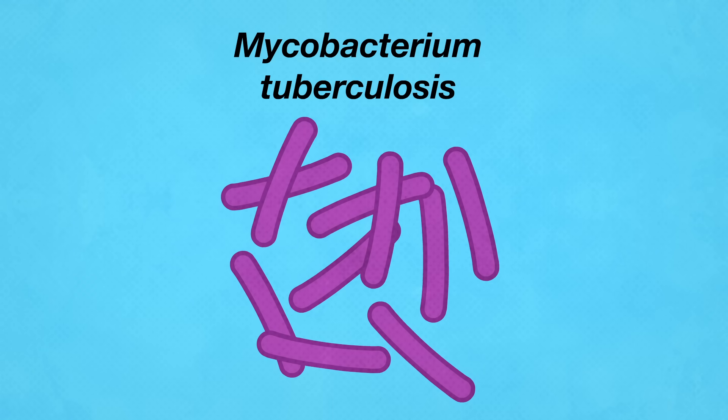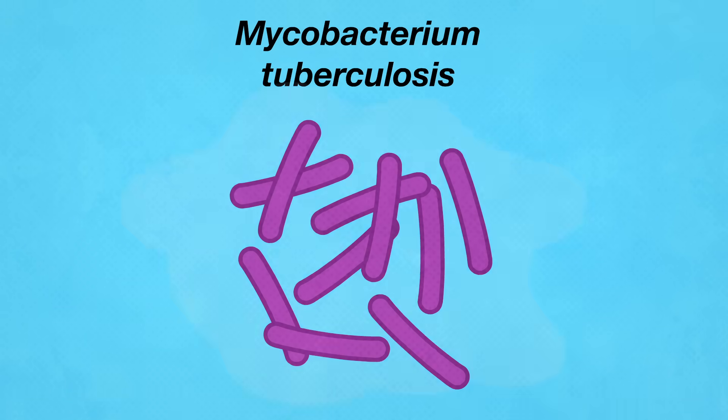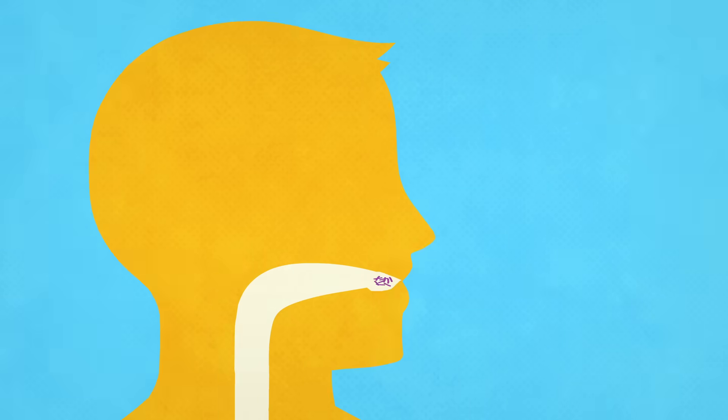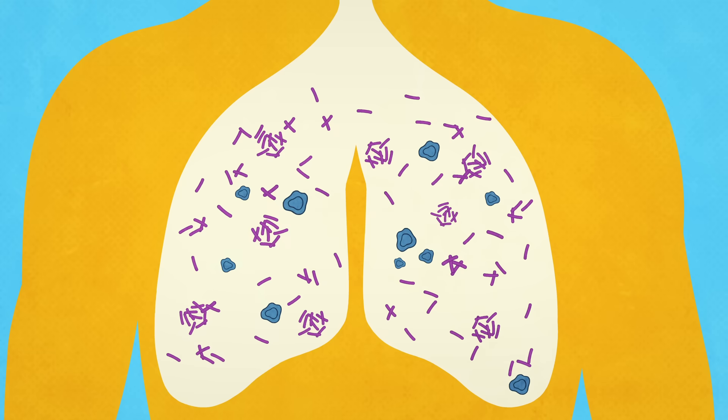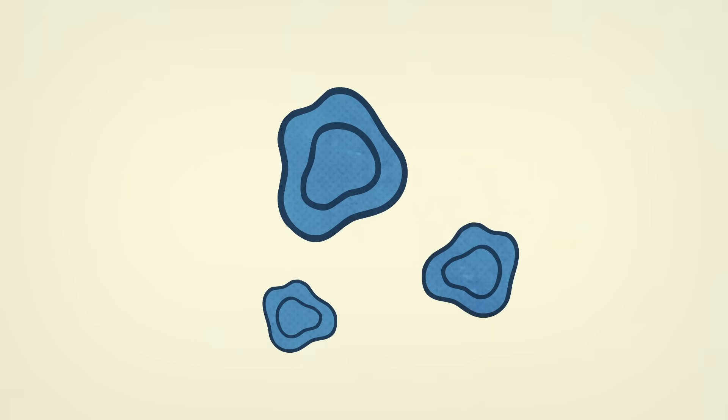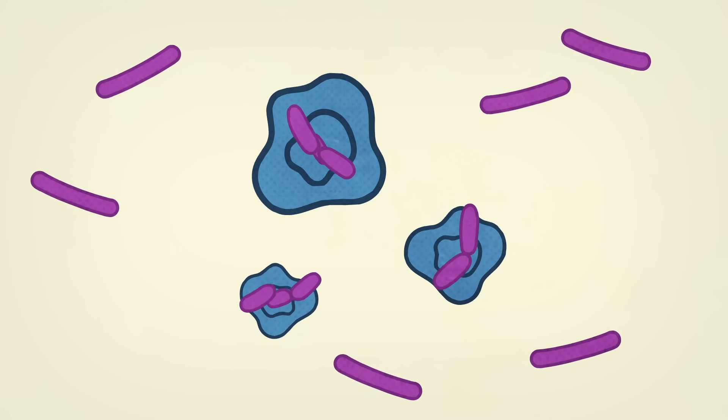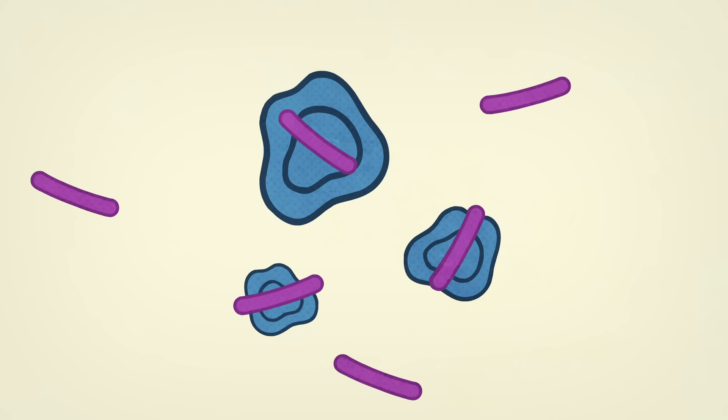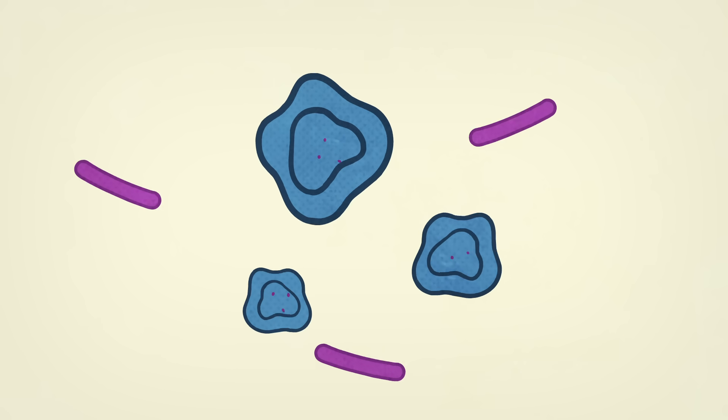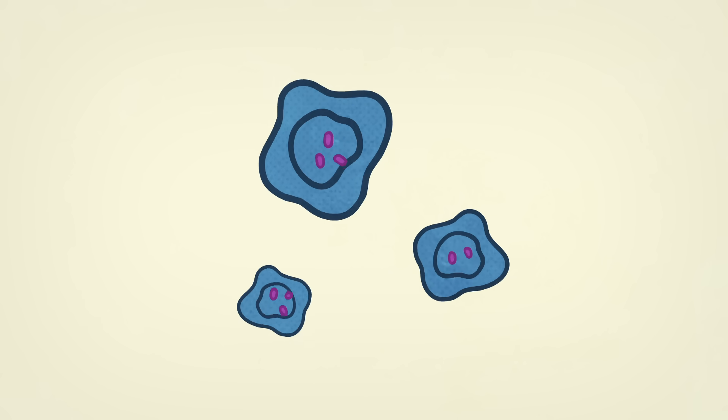Typically, TB bacteria, called Mycobacterium tuberculosis, are airborne. They travel into our airways and infect our lungs. Here, immune cells called macrophages rush to the infection site, attempting to absorb and break down the bacterial invaders. In many cases, this response is enough to remove the bacteria.